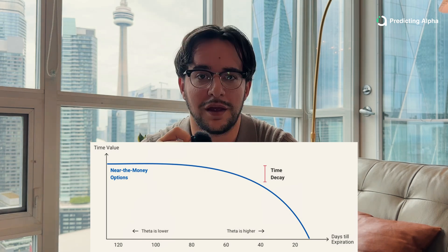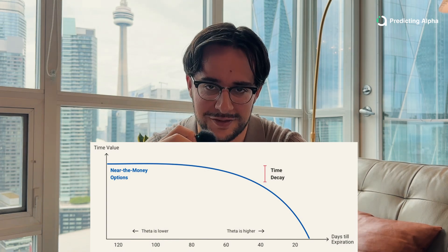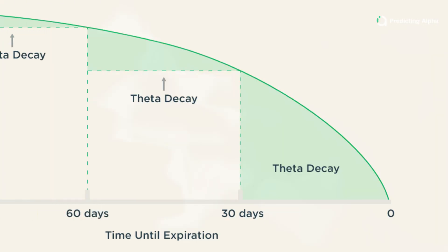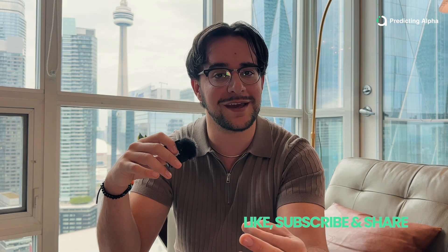Theta is just time decay. It tells you how much value an option is losing every day. If your option has a Theta of negative 0.1, that option is going to lose 10 cents of value every day, all other things held equal. If you're buying options, Theta is working against you; if you're selling options, Theta is definitely working for you. As an option gets closer to expiration, Theta accelerates — on the last day, 100% of the option value can decay. That's why near-dated options lose value faster if no big moves happen. And remember: there is no free money. When you collect Theta, you are holding risk on behalf of someone else. Someone is paying you Theta for exposure to Gamma.